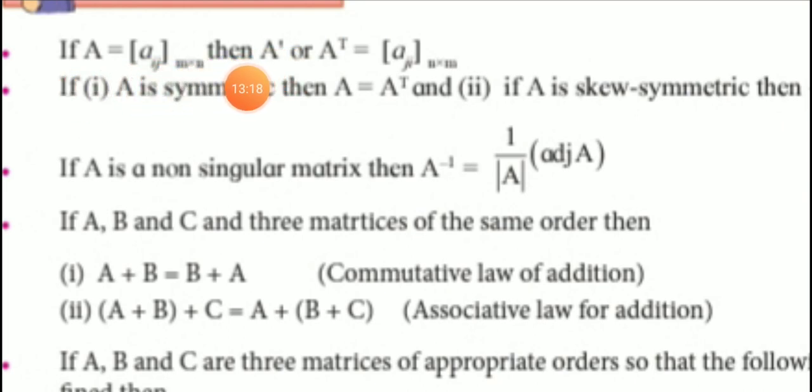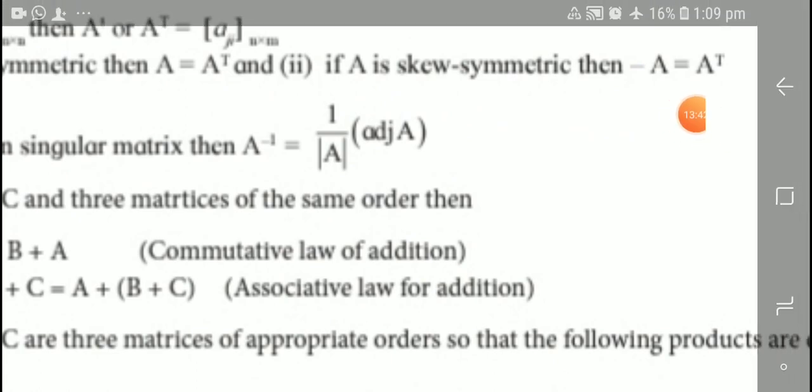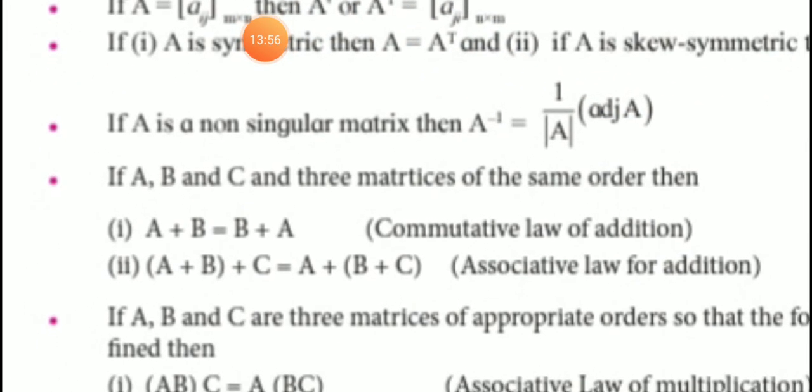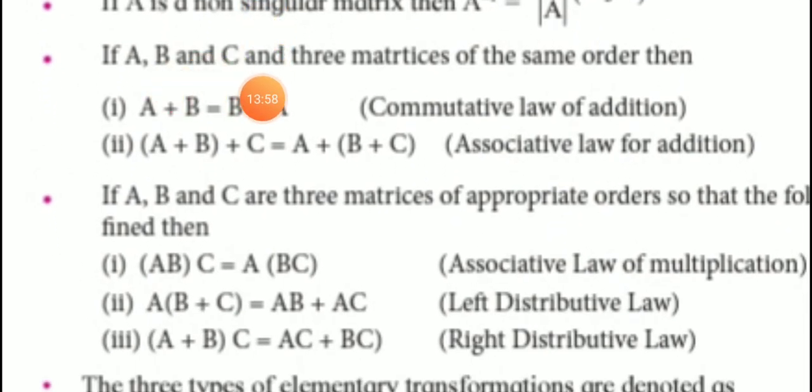For an m by n matrix Aij, A transpose is n by m. For a symmetric matrix, A equals A transpose. For a skew-symmetric matrix, A equals minus A transpose. If you have a matrix and its transpose with a minus sign, that's skew-symmetric. Remember this property: if A, B, C are three matrices of the same order, then addition is commutative and associative.